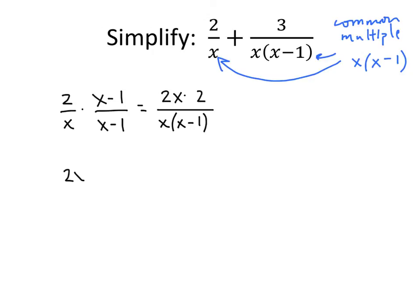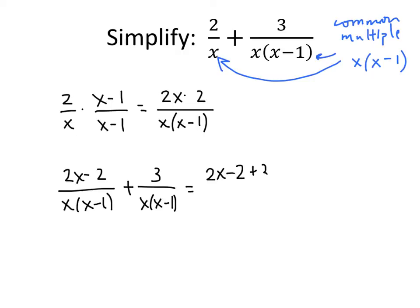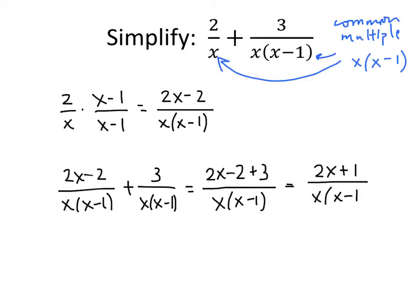So our two fractions now have the same denominator: (2x minus 2) over x times (x minus 1), plus 3 over x times (x minus 1). That means we can add the numerators: 2x minus 2 plus 3, all over x times (x minus 1). All we have to do is simplify the top. Negative 2 plus 3 is positive 1, so we get 2x plus 1, all divided by x times (x minus 1). And we're done.